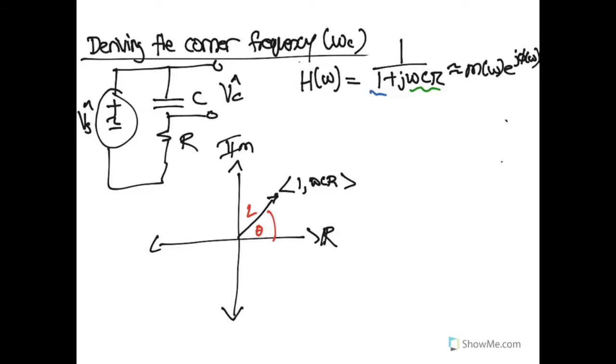And so the length of this is going to be, so we'll just call this L, the length is going to be the X component squared, the Y component squared, and the square root of it. So this would be 1 squared, ω² C² R² and the square root of that.